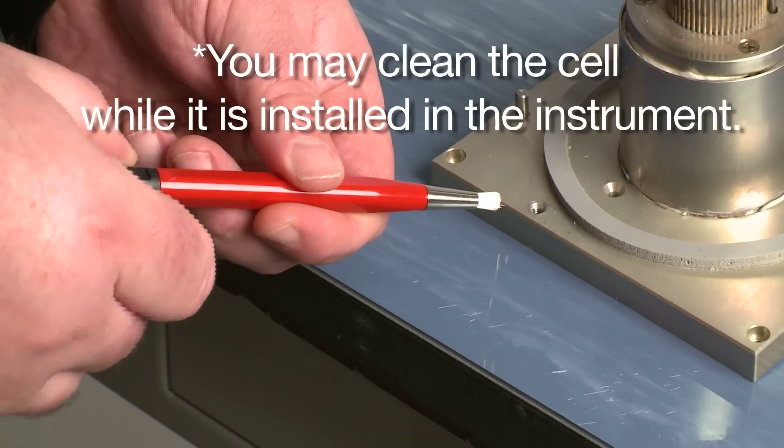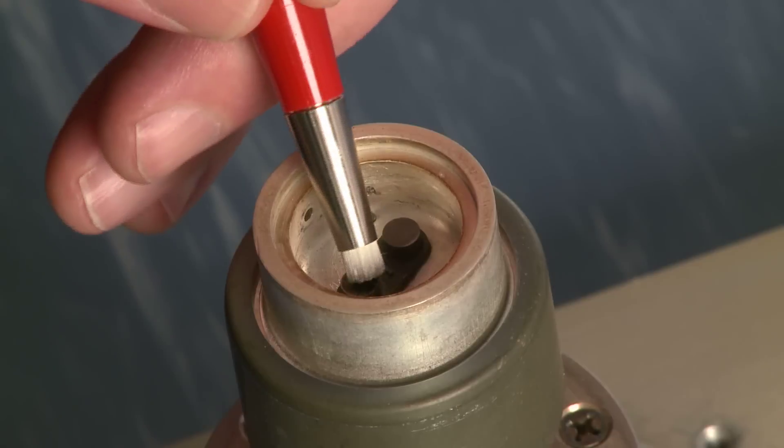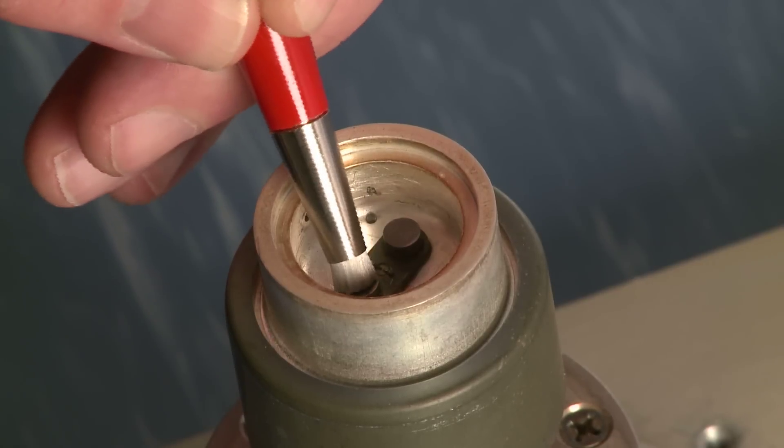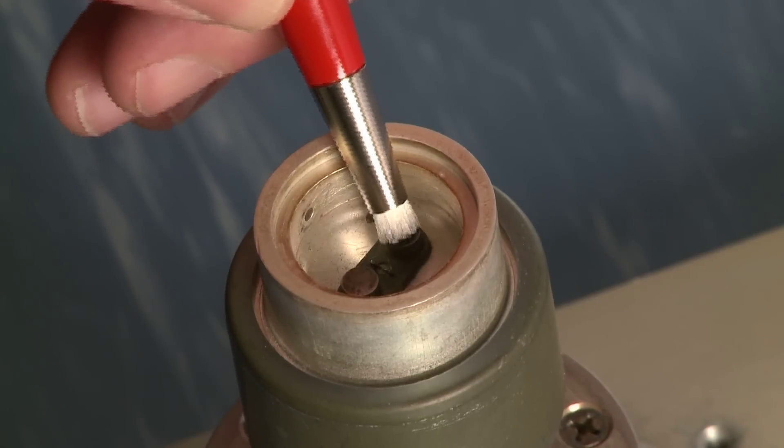Simply bring the bristles back in a little bit so you have about the length of a pencil eraser, and then using the motion of a pencil eraser, polish the cell sensors.